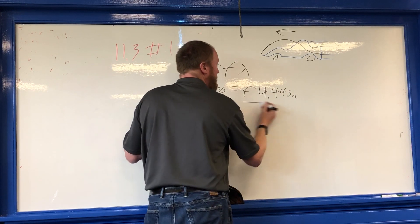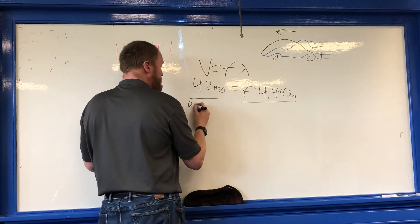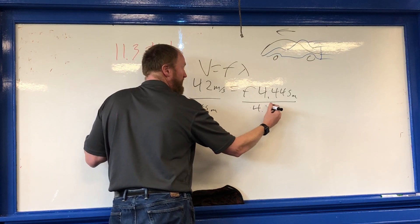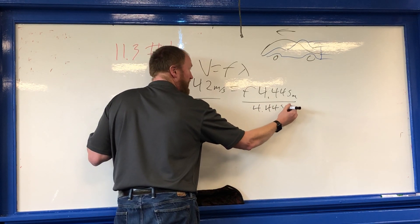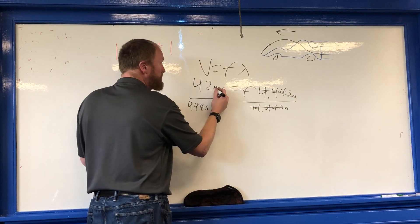In order to do this I've got to divide both sides by the length. I'm trying to get f by itself. Divide both sides by 4.445 meters. That all cancels. Meters cancel.